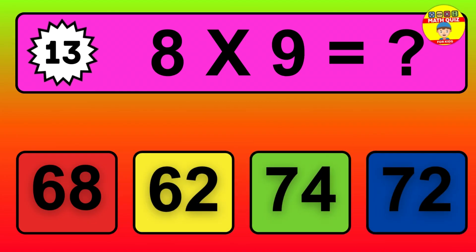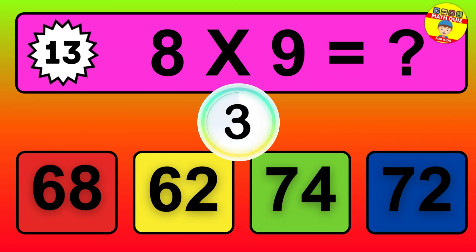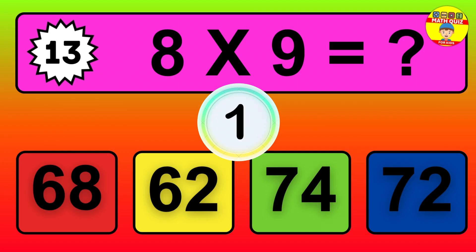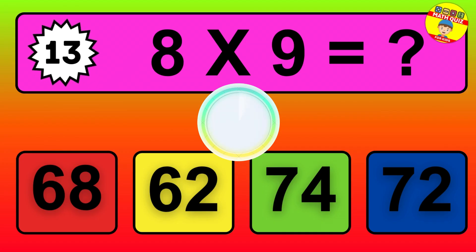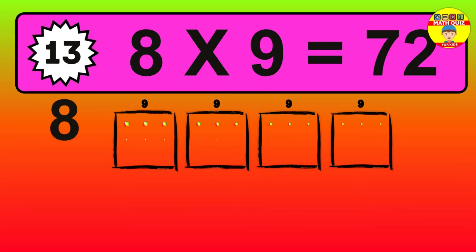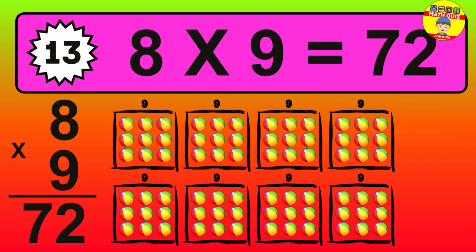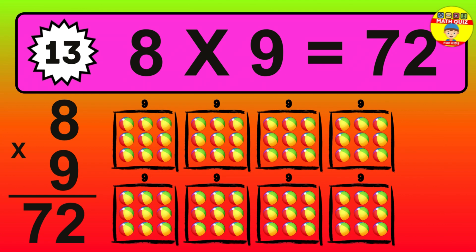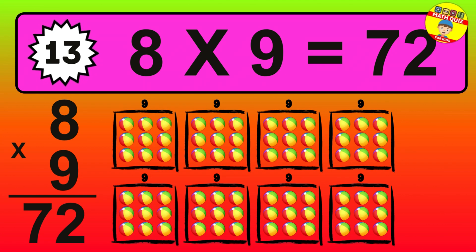Question 13. 8 times 9 equals what? The answer is 8 times 9 is 72. To calculate, we have 8 groups with 9 balls each one. So, how many balls do we have?